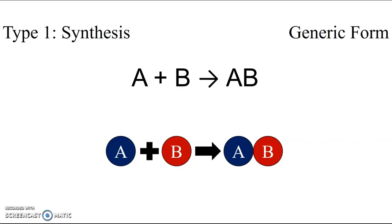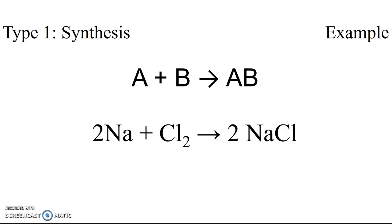In the synthesis reaction, there are always going to be multiple reactants and only a single product. An example of the synthesis reaction is when sodium metal reacts with chlorine gas to produce sodium chloride — table salt. So sodium is the A element and chlorine is the B element, and together they form the compound sodium chloride.